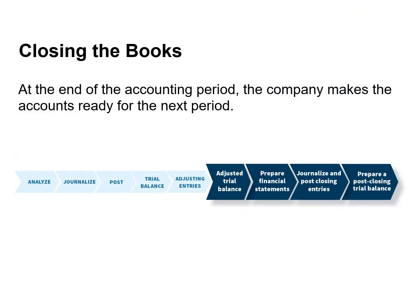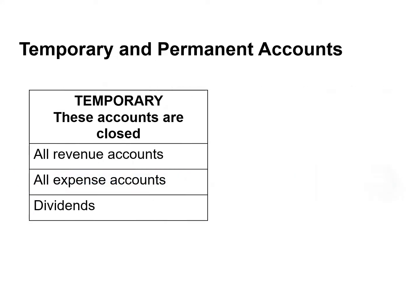At the end of the accounting period, the company makes the accounts ready for the next accounting period by journalizing and posting closing entries. In previous chapters, you learned that revenue, expense, and dividend accounts are subdivisions of retained earnings.